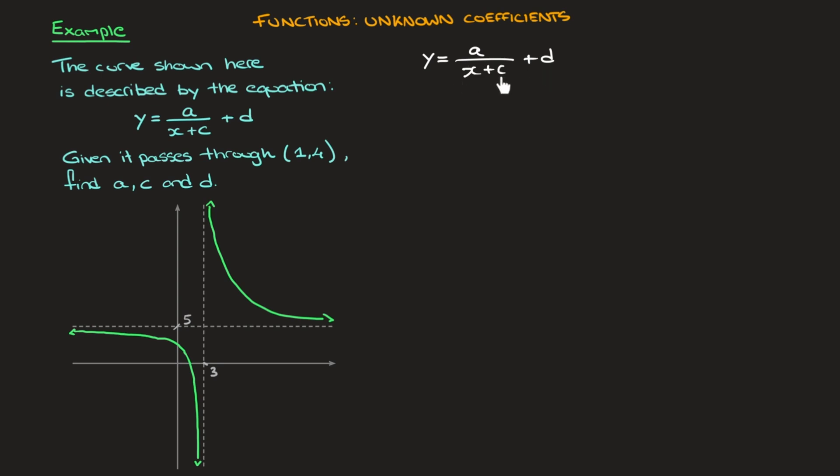To figure out what c has to be on the denominator, we focus on the vertical asymptote. Since this vertical asymptote cuts the x-axis when x equals 3, we can go ahead and state that its equation is x equals 3. And remember,